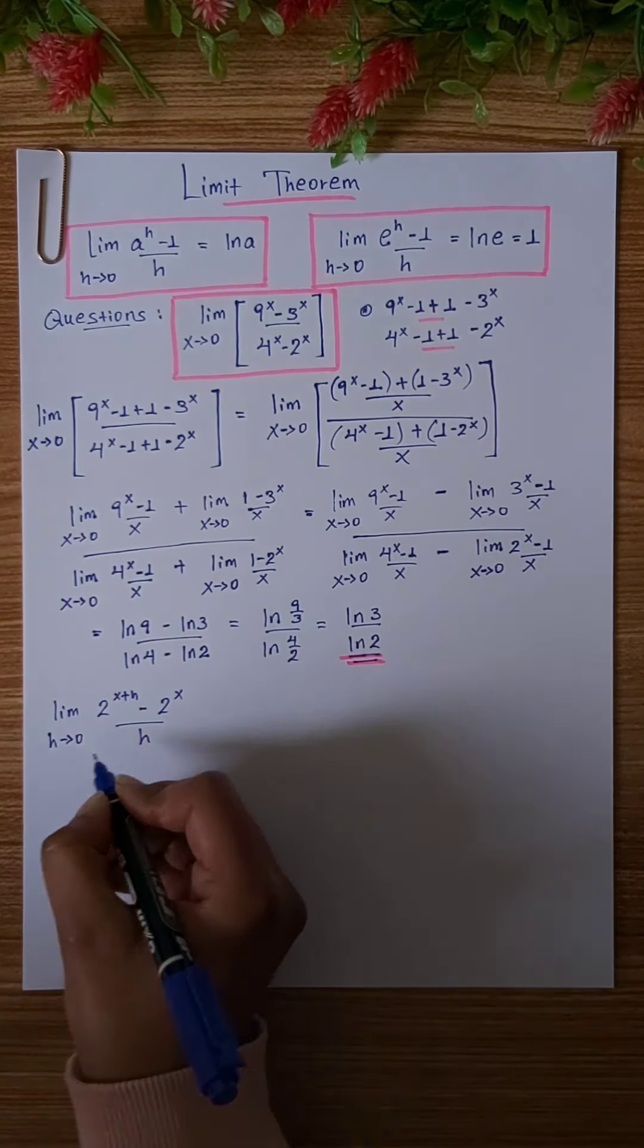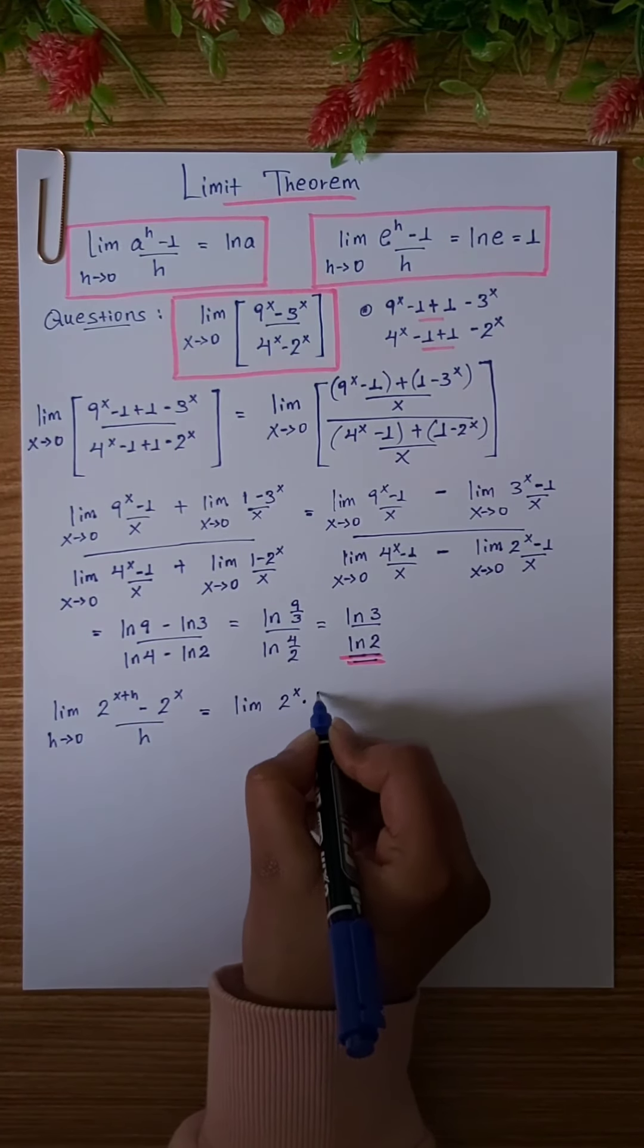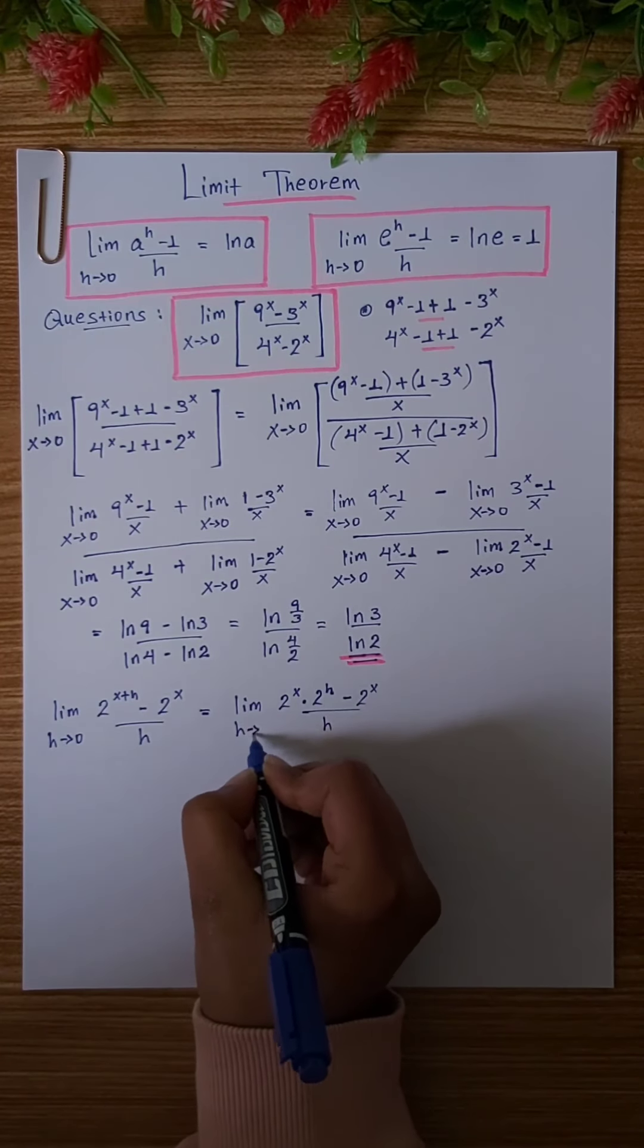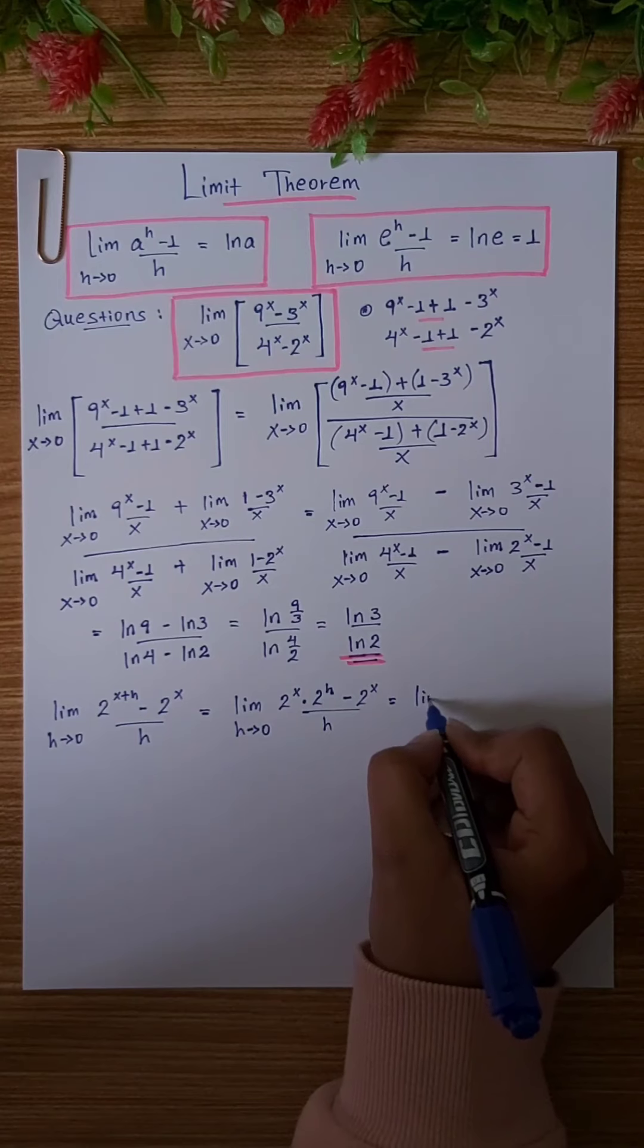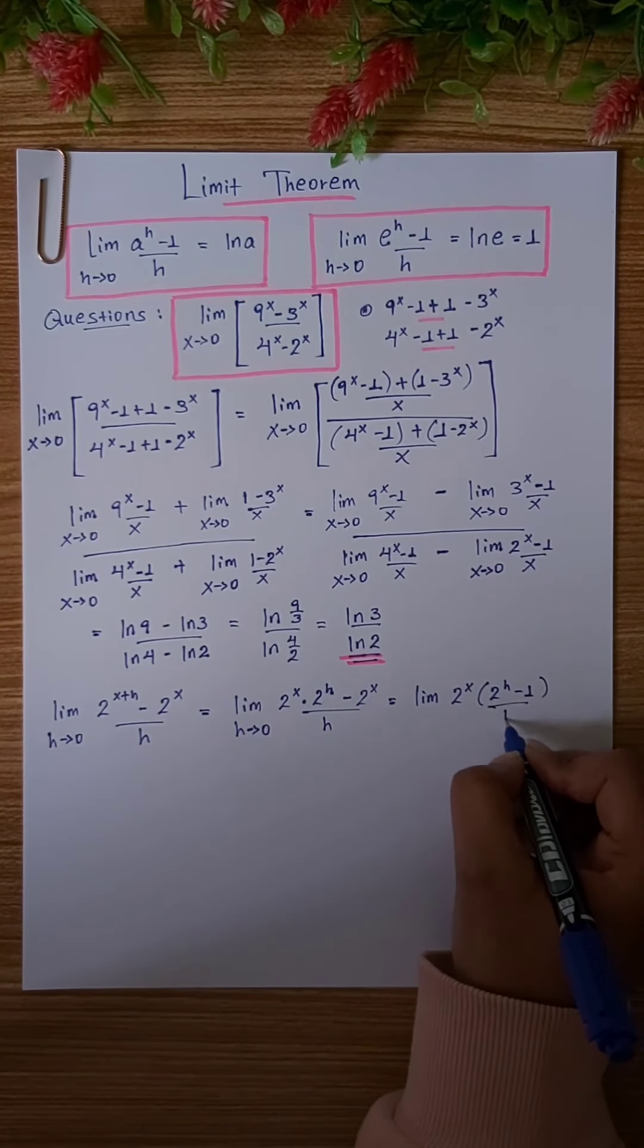Now let's look at the limit of 2 to the power of x plus h minus 2 to the power of x over h as h tends to 0.